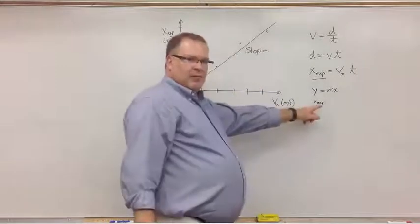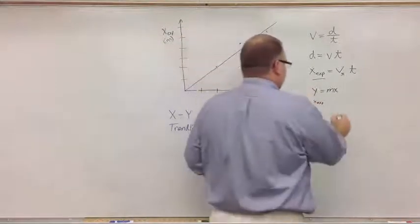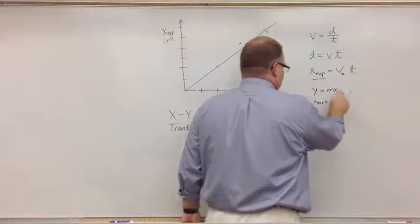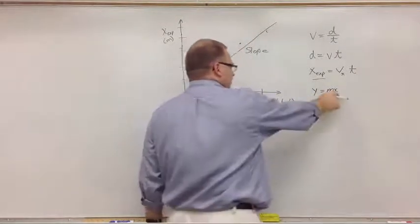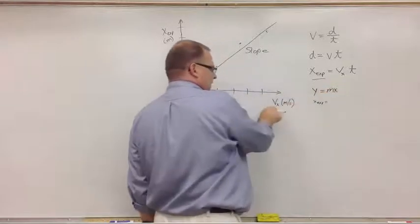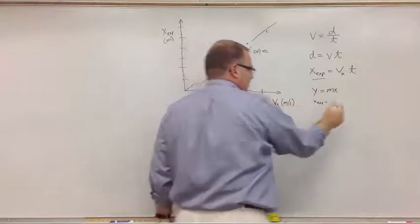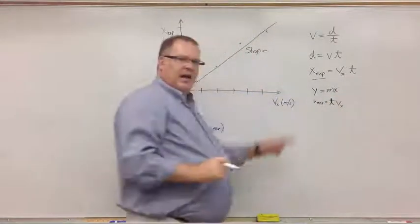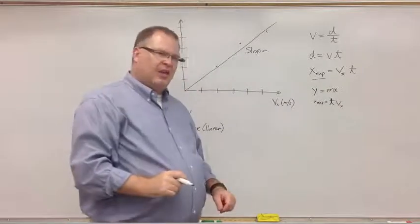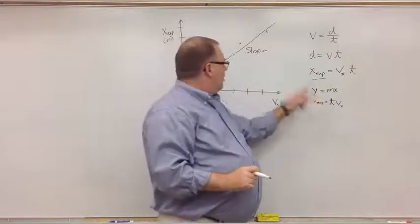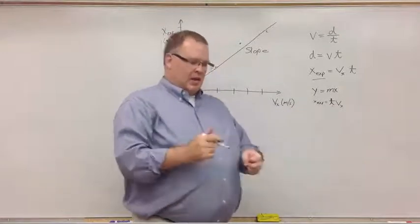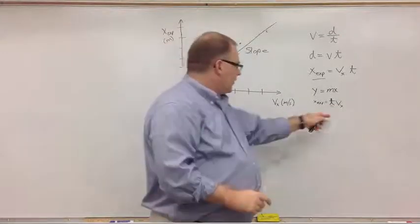My x value, my experimental x value is my y. My slope, I'm going to come back to that. Because my, now my x, this is where it gets tricky. My x is an x. My x-coordinate, my x-axis, is the speed. So my drop time, my t, is the slope.